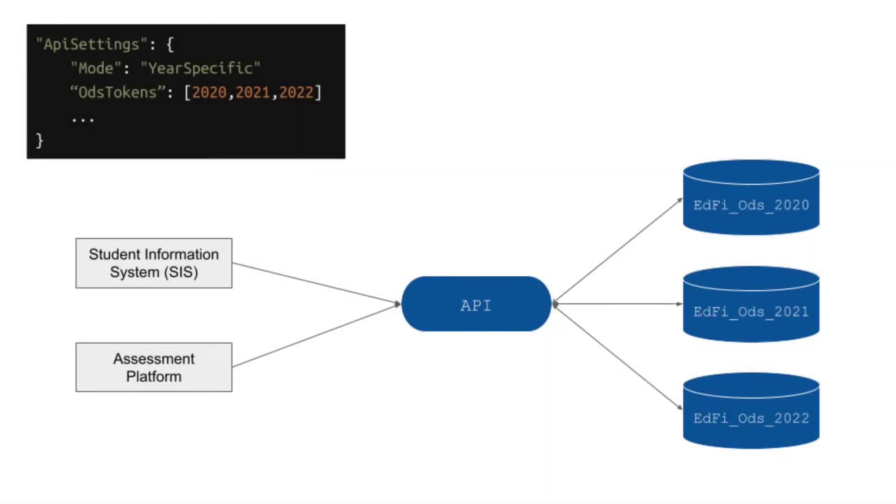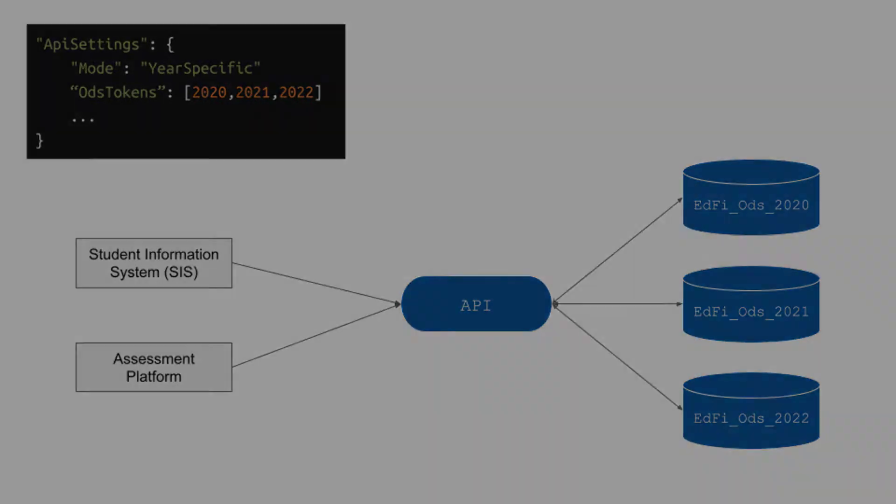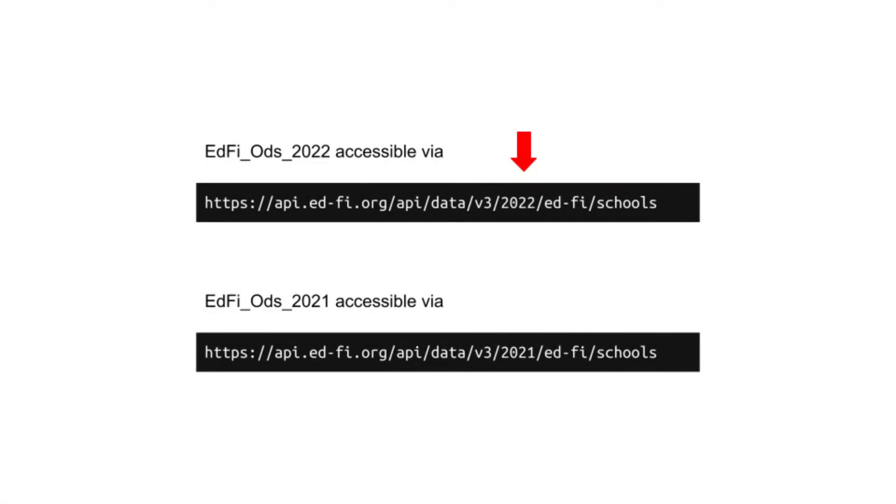Let's move on to Year Specific next. This is the one that I recommend most of the time. I recommend that a local education agency, or LEA, creates an ODS per school year and does not store multiple years of data in one ODS. Year Specific allows for many ODSs to be accessible via the API. The EdFi API routes traffic to the appropriate ODS based on the URL. Even if you're unsure if you want multiple years of data accessible via the API, I still recommend that you use Year Specific over Shared Instance and simply configure the API to only register one ODS instance.